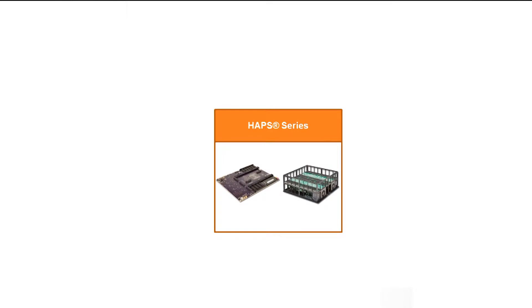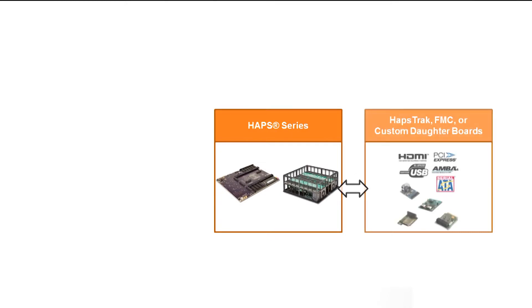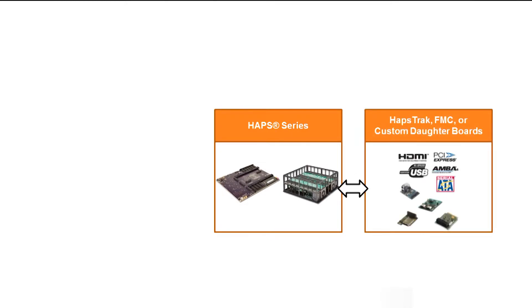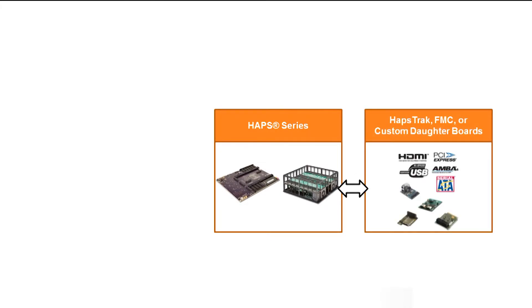Here's a high-level view of the interface between a HAP series system and Proto-Compiler. Design and utilities help migrate RTL, IP, and constraints of the ASIC design into the FPGAs and HAPs track daughterboard resources of a HAP system.